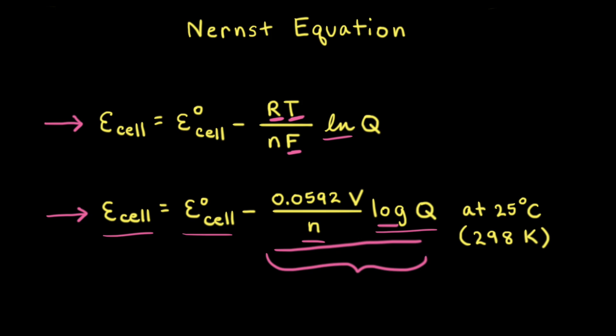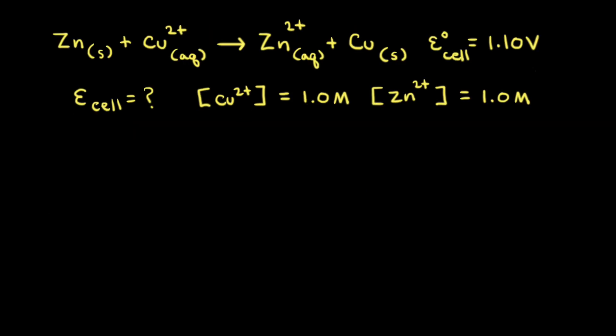You can use the Nernst equation to quantitatively calculate the exact voltage at a specific moment in time. However, we're going to think about the Nernst equation from a qualitative point of view. Let's use the Nernst equation to think about the instantaneous cell potential for a zinc-copper cell and look at a few different situations. In a zinc-copper cell, solid zinc is oxidized to zinc²⁺ ions and copper²⁺ ions are reduced to form solid copper. The standard cell potential at 25 degrees Celsius is positive 1.10 volts.